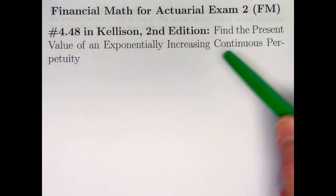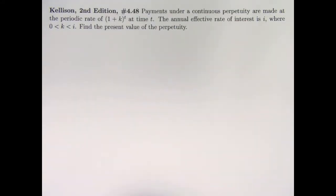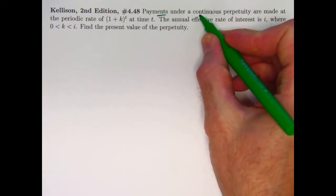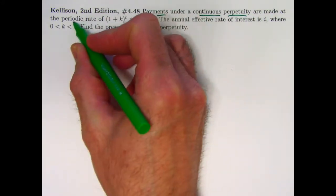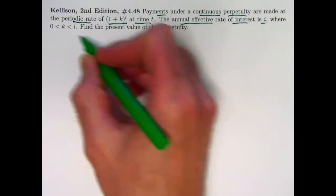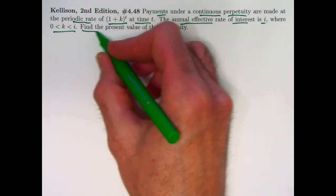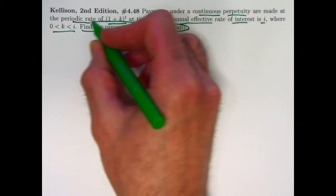Problem 4.48 is about finding the present value of an exponentially increasing continuous perpetuity. Payments under a continuous perpetuity are made at a periodic rate of 1 plus k to the t at time t. The annual effective rate of interest is i, where k is assumed to be between 0 and i. Find the present value of the perpetuity.